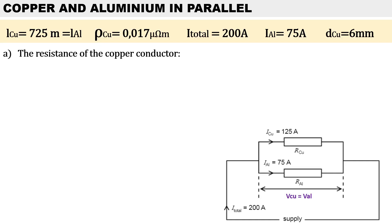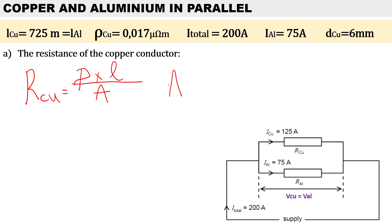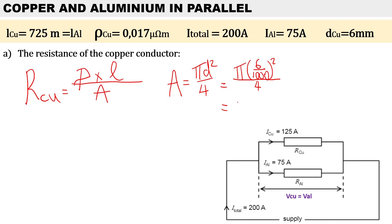To calculate the resistance for copper, we use the formula: resistivity for copper times the length of the cable divided by the area. We don't have the area but we do have the diameter, so to calculate the area it is pi d-squared over 4. Substituting pi and the diameter — converting millimeters to meters by dividing by 1000 — squared over 4, the area is 2.827 times 10 to the power of minus 5 meters squared.